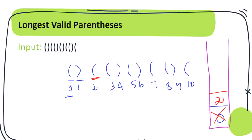Moving to index 2, which is an extra bracket, we push index 2 to our stack. Moving on to index 3, which is an open bracket, we push index 3. The next character at index 4 is a closed bracket, so the corresponding open bracket at index 3 is popped from our stack. The next character is an open bracket at index 5, so we push index 5. At index 6 there is a corresponding closed bracket, so we pop that from our stack. Moving to index 7, which is an open bracket, we push index 7 to the stack.